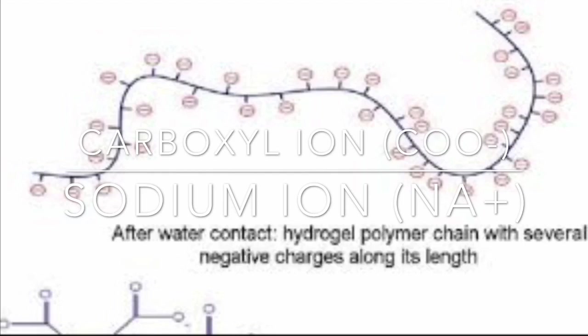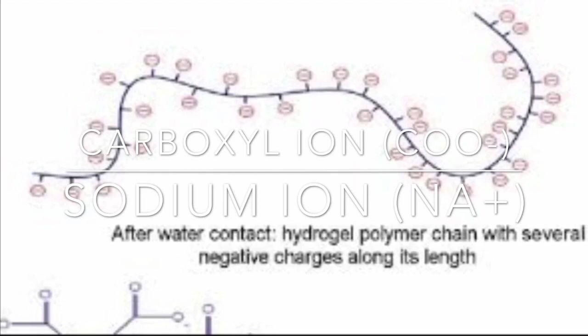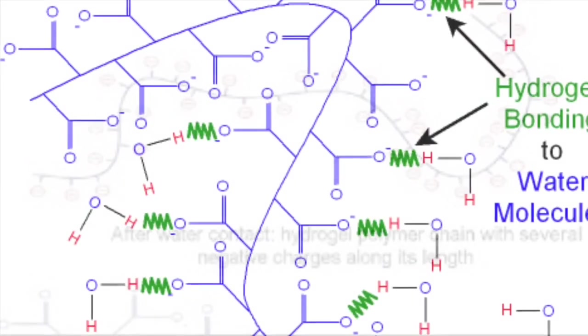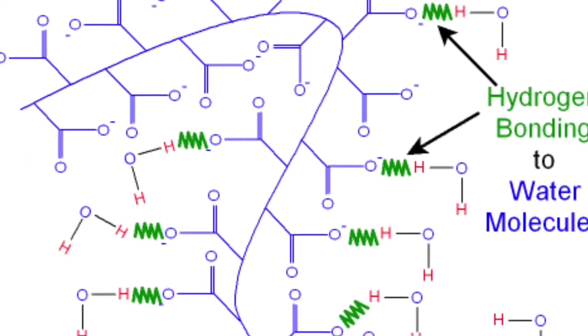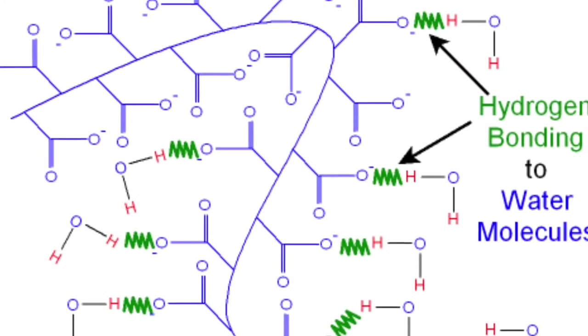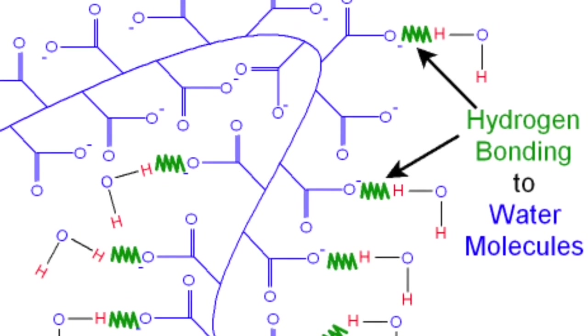Left with negatively charged carboxylic groups down its main chain, the polymer gains a significant polar charge since it contains sodium. Thus, this polar charge allows it to form hydrogen bonds as polar water molecules get attracted to its negative charges.